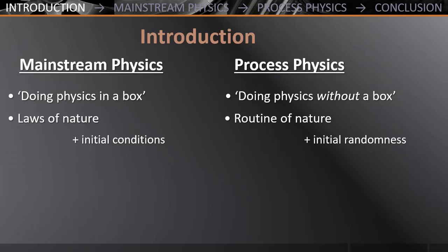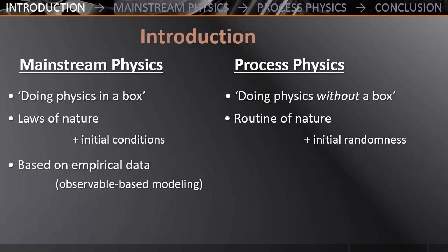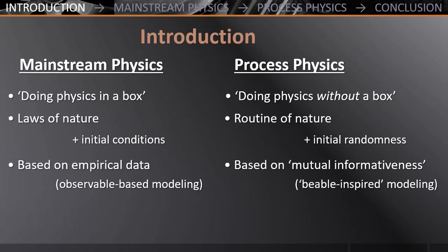Furthermore, mainstream physics deals with information for us — that is, observables in the form of empirical data — whereas process physics is all about information for the process itself. Process physics doesn't give a reproduction formula for empirical data like our conventional physics does, but it basically simulates the processuality of nature by modeling its beables — that is, by modeling nature's events and their relational crosstalk, by means of a relational monodology.